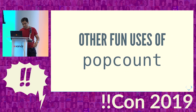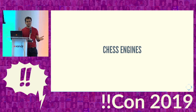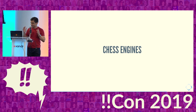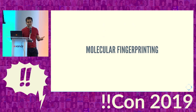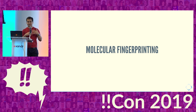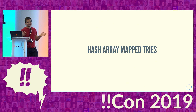There are other fun things you can do with pop count. Most chess engines these days use a bitboard representation — they represent some attribute of a board as a series of ones and zeros — and if you want to do useful things with that, pop count. If you're interested in molecular fingerprinting, you turn a molecule into a signature of ones and zeros and compare them using pop count.